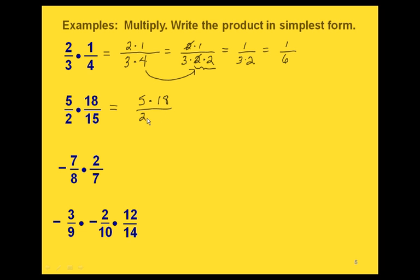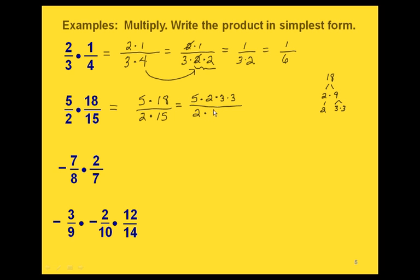Let's do the same thing for this one. We start by writing the numerators together and the denominators together, then do our prime factorizations. The prime factorization of 18: since it's even, we write it as 2 times 9, giving us 2 times 3 times 3. And 15 has prime factorization 3 times 5. Now we look for factors to cancel: we cancel a 2, a 3, and a 5. What we have left on the top is a 3, and since we canceled everything on the bottom, we have a 1 in the denominator. So we can just write this as the whole number 3.